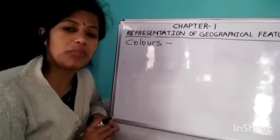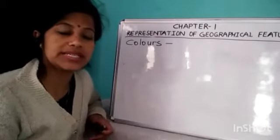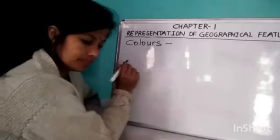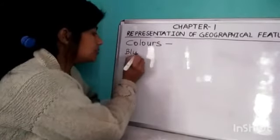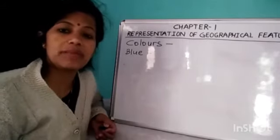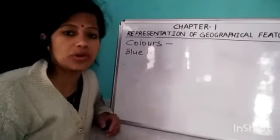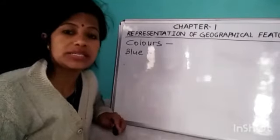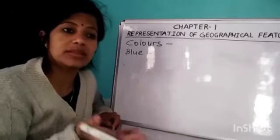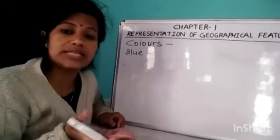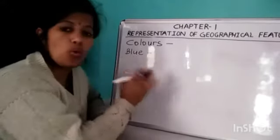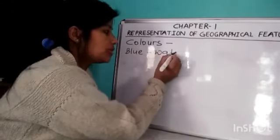Colors play an important role in understanding a map. The first color is blue. On a topographical map, blue represents water bodies. Dark blue means deep water, and light blue represents shallower water bodies.